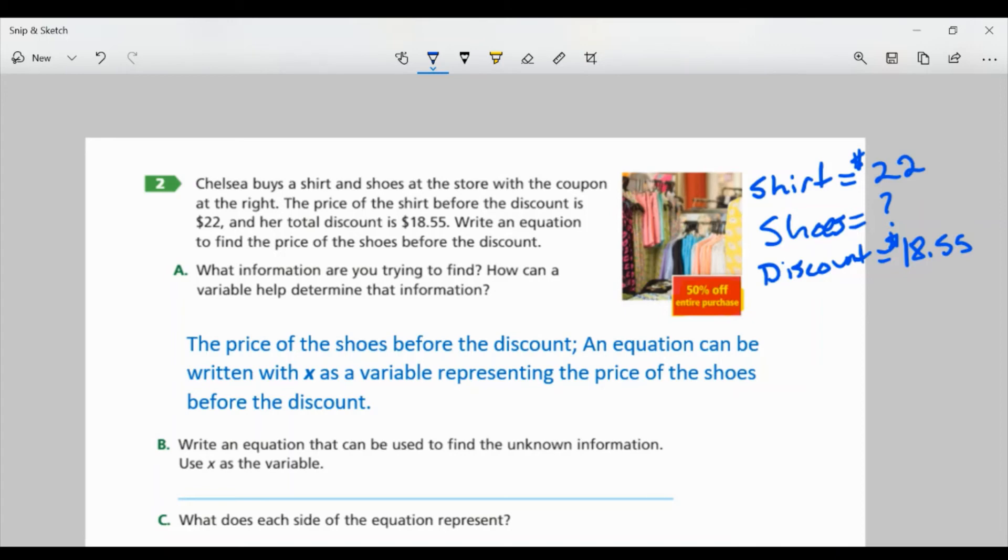Well, the information we're trying to find is the price of the shoes before the discount, right? That's what we're looking for. An equation can be written with X as a variable representing the price of the shoes before the discount. So, I know the price of the discount. We're going to use X.